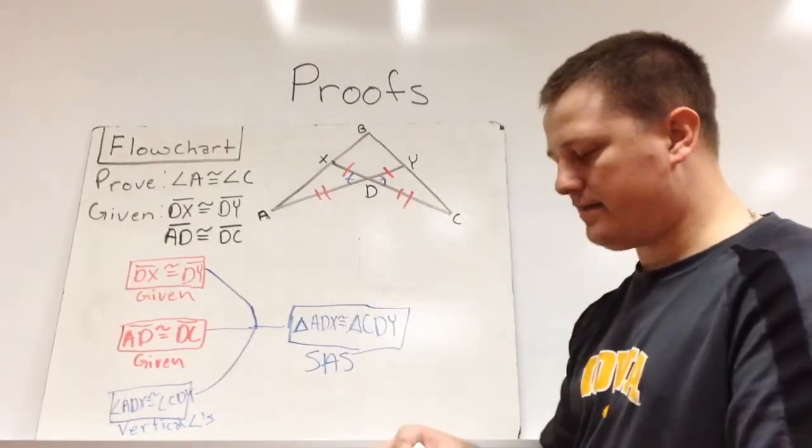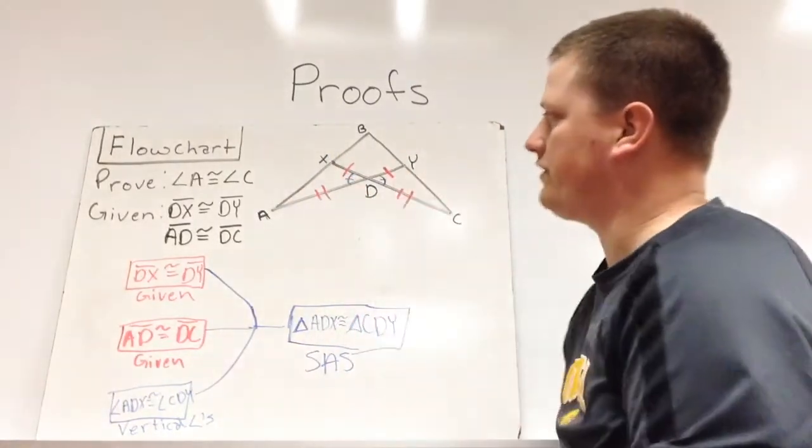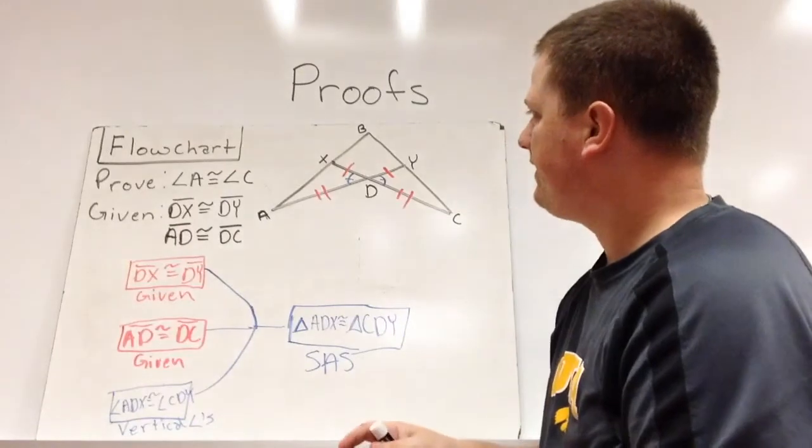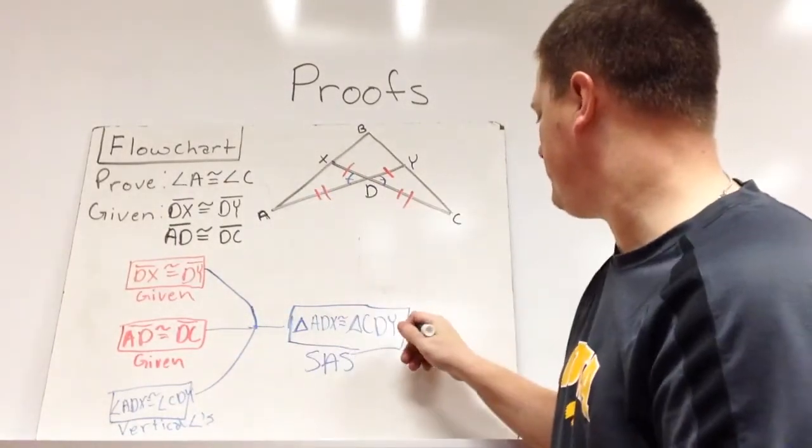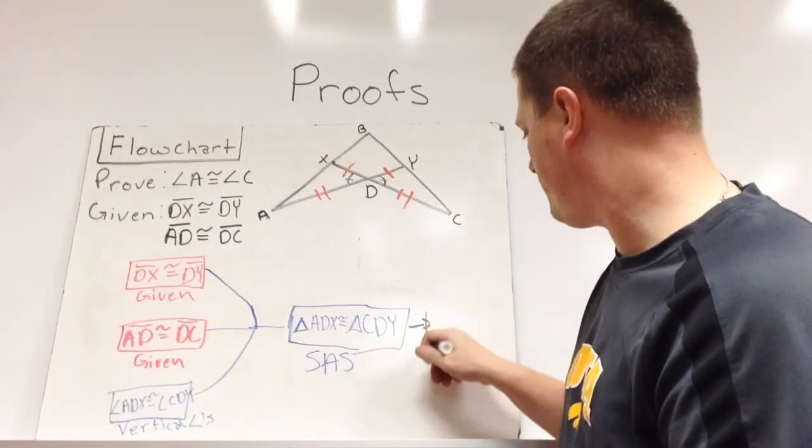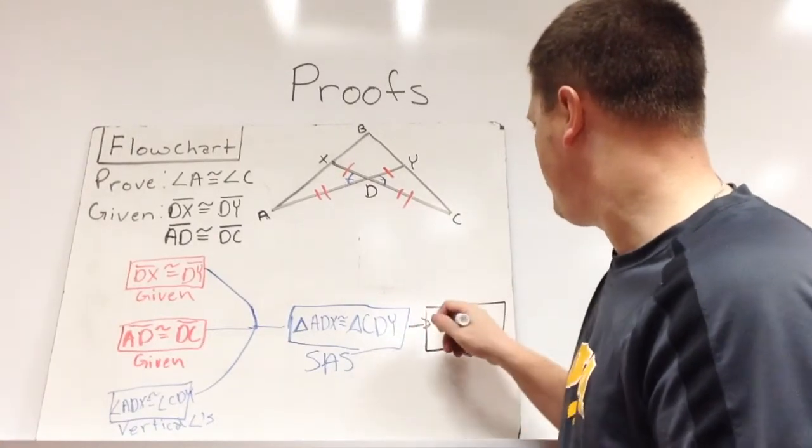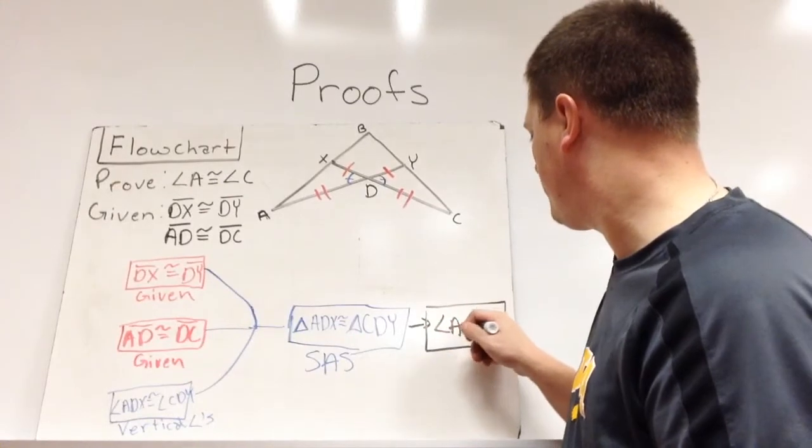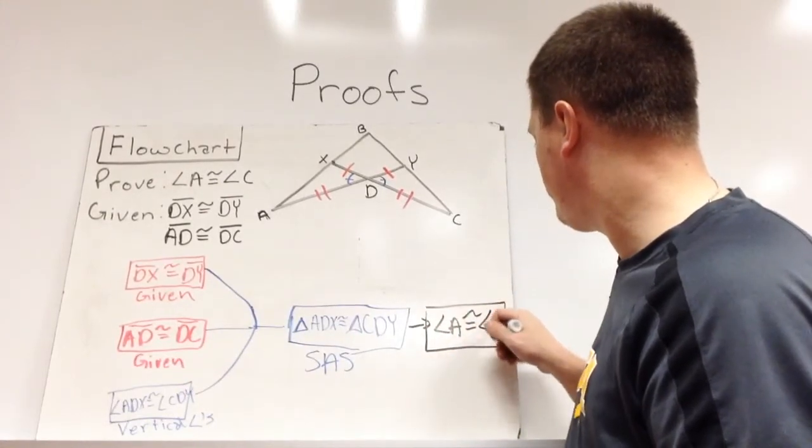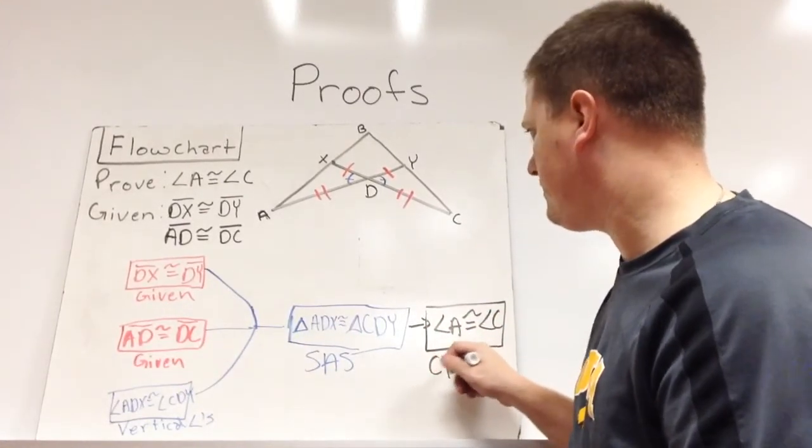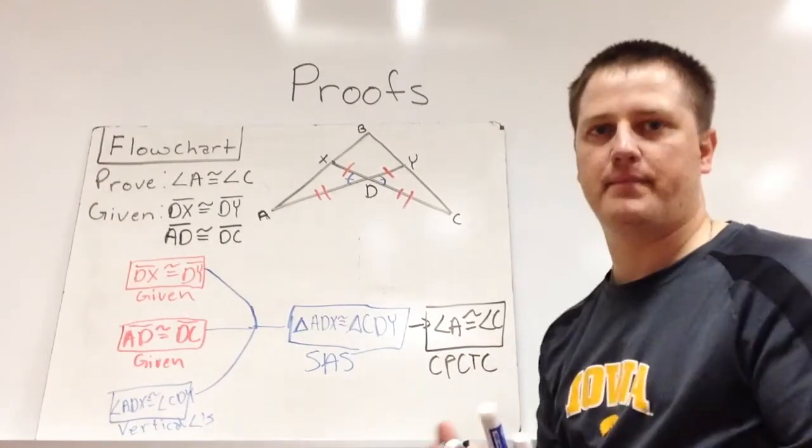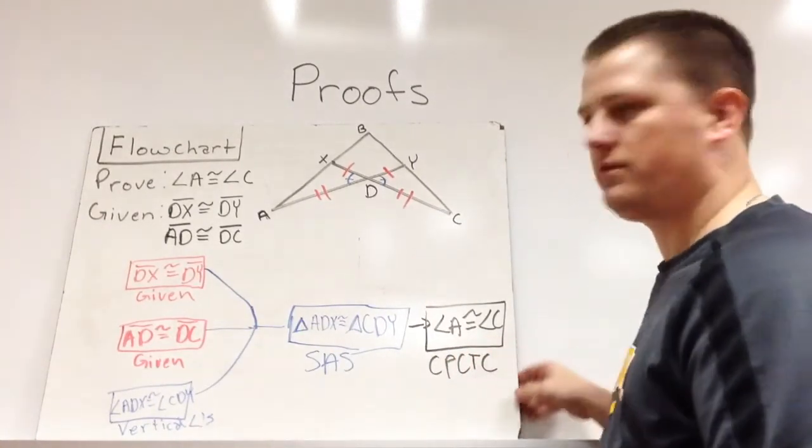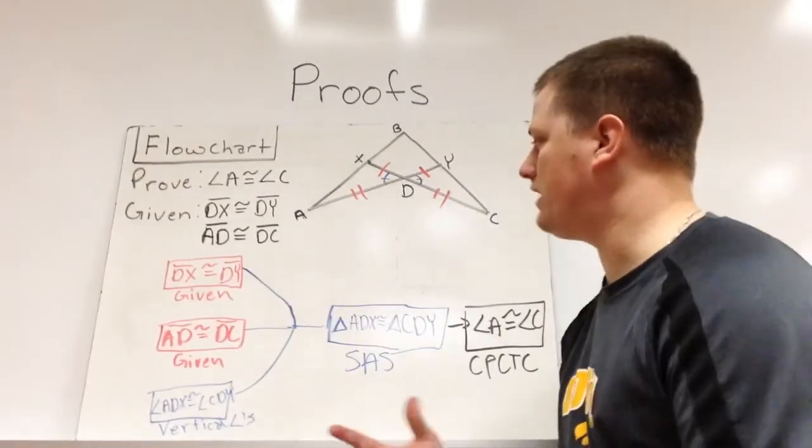And because these two triangles are congruent, that leaves us with angle A and angle C being congruent, again, because of CPCTC. So this is going to leave us with angle A congruent to angle C because of CPCTC. So this is what a flowchart kind of looks like.